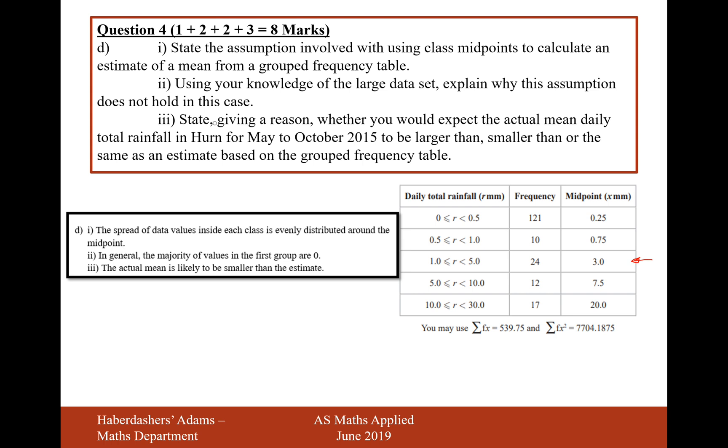And part 3 states giving a reason whether you would expect the actual mean daily total rainfall in Herne from May to October 2015 to be larger than, smaller than, or the estimate based from the grouped frequency table. The actual mean is likely to be smaller than the estimate from this table, because, as I say, most of the actual recorded values are on the lower end of each of these grouped intervals. So there we are, that's the answer for question 4, worth 8 marks in total there. Let's now move on to question 5.